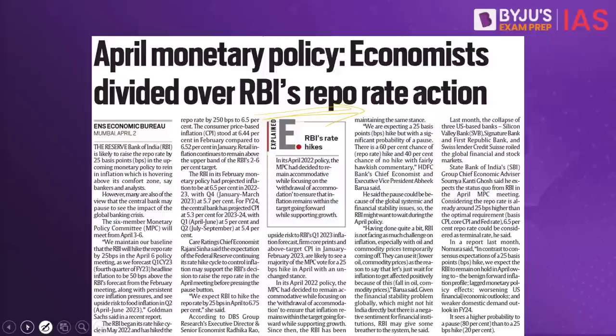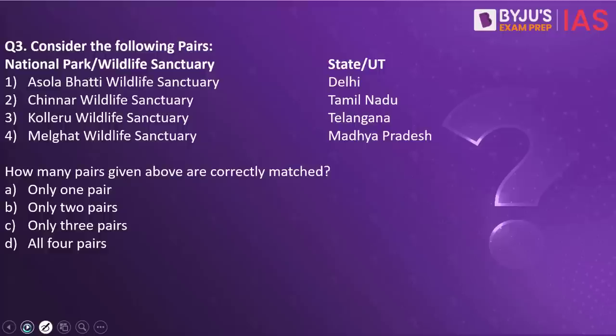Consider the following pairs — National Park or Wildlife Sanctuary on one side, and State or Union Territory on the other side. The pairs are: Asola Bhatti Wildlife Sanctuary–Delhi; Chinnar Wildlife Sanctuary–Tamil Nadu; Kolleru Wildlife Sanctuary–Telangana; Melgat Wildlife Sanctuary–Madhya Pradesh. How many pairs given above are correctly matched? The answer is only one pair.